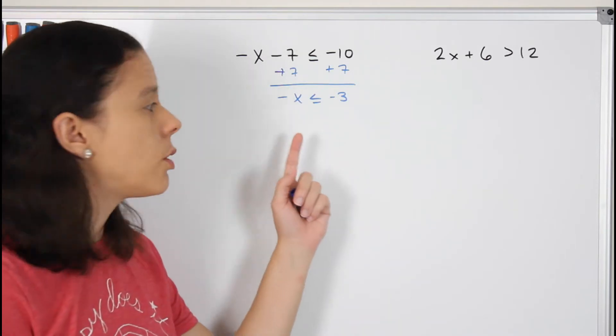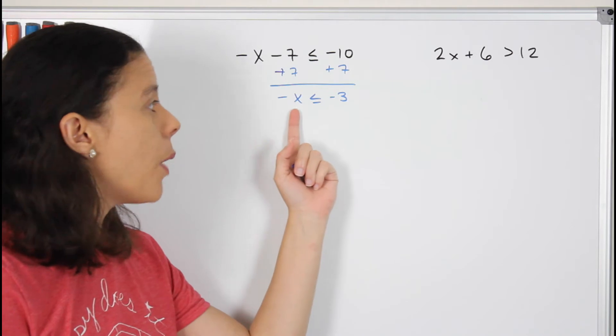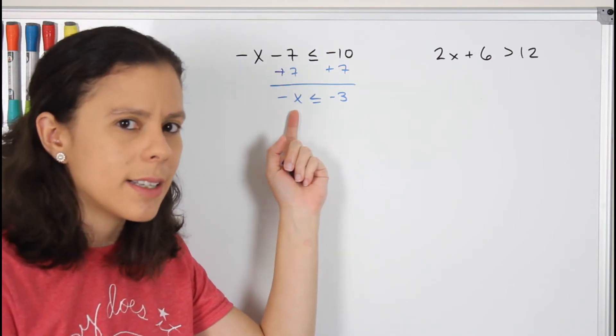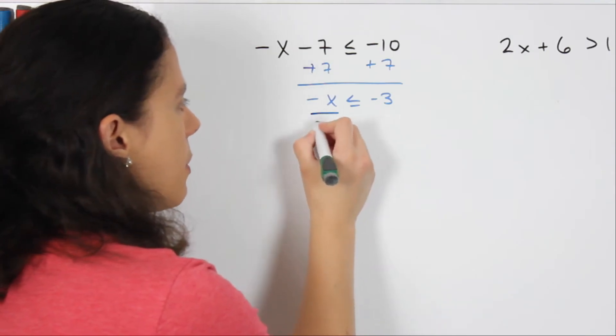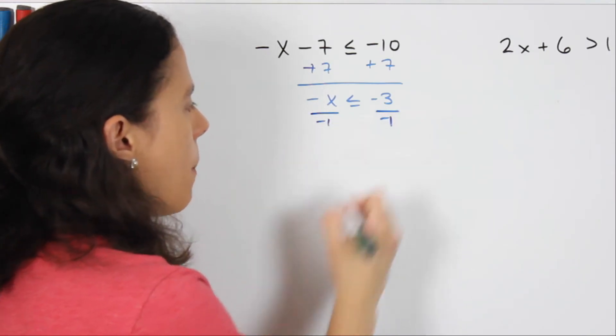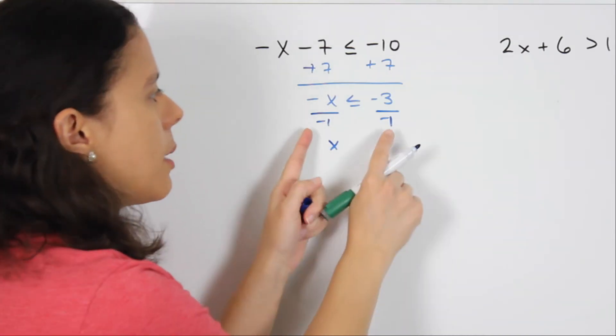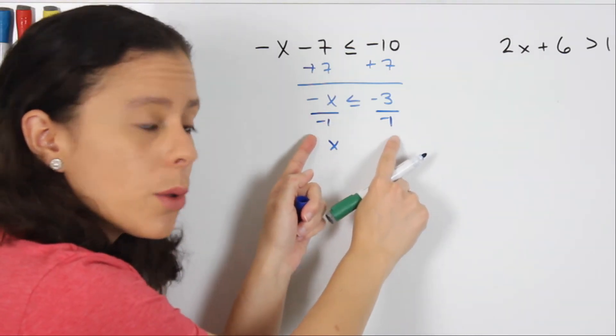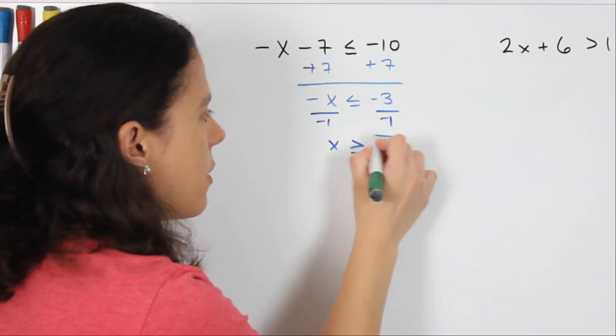So in this case, I'm going to have to multiply or divide by negative 1 in order for me to get a positive x because I want to find out what x is, not what negative x is, right? So I'm going to divide by negative 1 on both sides. I get x. I have to flip the sign because I've divided by a negative number on both sides. So this is going to be greater than or equal to positive 3.